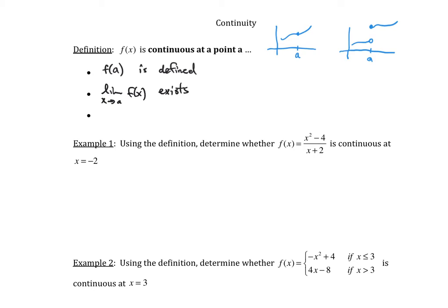The third requirement is that the limit as x goes to A of f of x must equal f of A. If you look at this second picture, the limit does not exist because you get two different numbers as you come from the left and from the right. So here's an example where the limit does not exist.